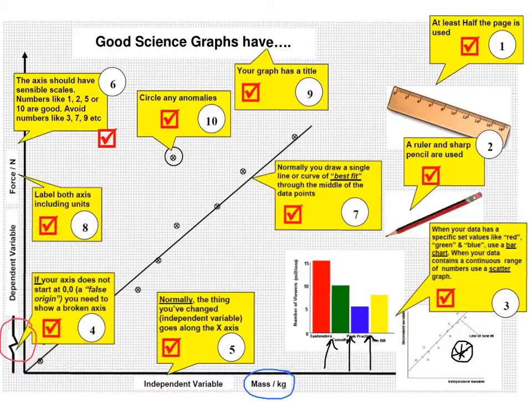Number six says the axis should have a sensible scale. Numbers like 1, 2, 5 and 10 are good. Avoid numbers like 3, 7, 9 just because of the nature of graph paper. It's easier to count and plot, and if an examiner is checking, it's quicker and more efficient for them to verify you are correct. Pick numbers that are appropriate to the scale shown on the graph paper.